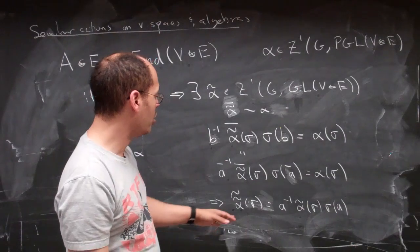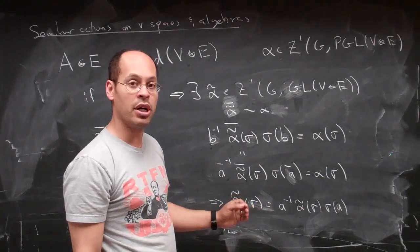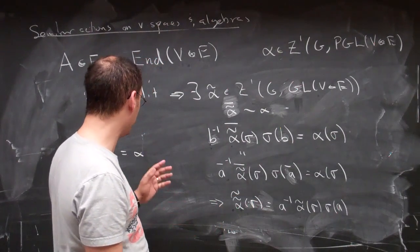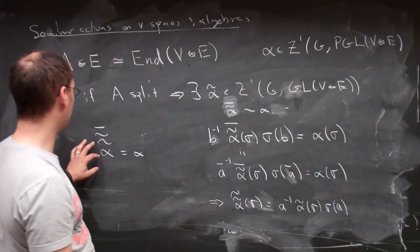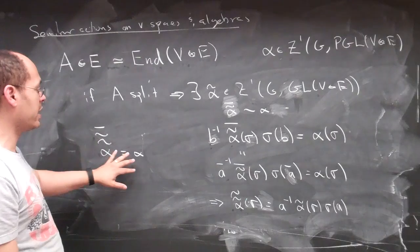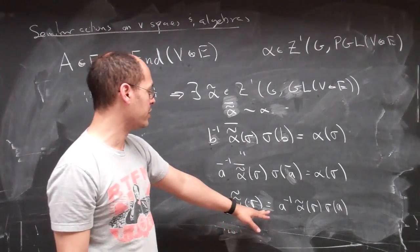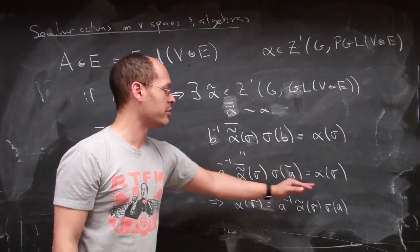And this is now something co-homologous to my original alpha. But the main point here is that by construction, if I take the bar of my alpha double tilde, I get exactly alpha, because the bar of this alpha double tilde is this thing, which is my alpha.